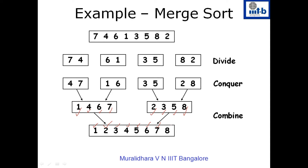The merge sort algorithm is simple. You divide the given array of eight numbers into two halves — the first half has seven, four, six, one, and the second half has three, five, eight, two. You recursively call the merge sort function on each half. The left-hand side, after recursion, gives a sorted sequence: one, four, six, seven. The right-hand side, after recursion, gives: two, three, five, eight.